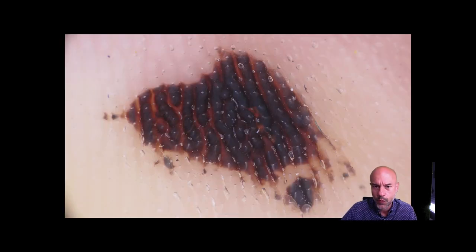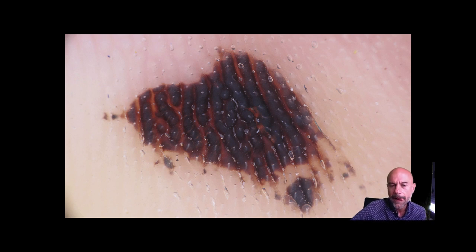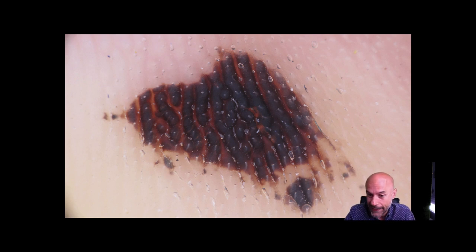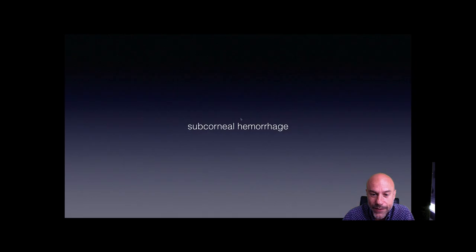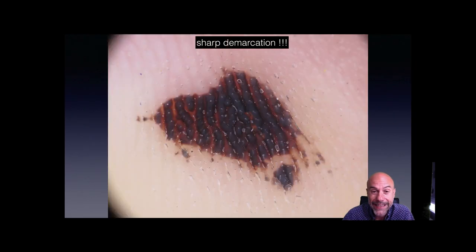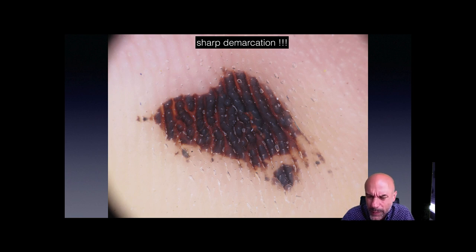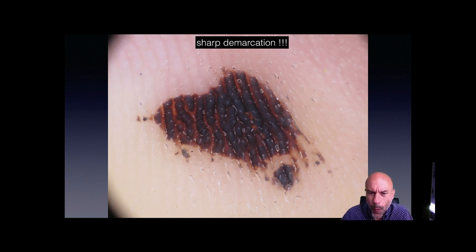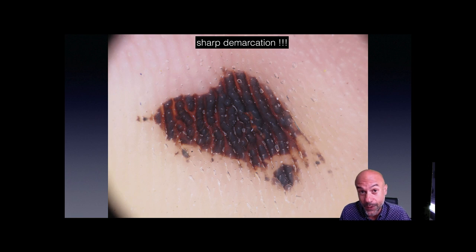In the next image, we can see a quite similar pattern that looks rather like a parallel ridge pattern. But this is not melanoma — this is a hemorrhage. We can say so because of the red color, and mainly because of the very sharply demarcated outline of the lesion, and also because of the presence of satellite hemorrhages not connected to the main body of the hemorrhage, which reveals that this is simply blood. Subcorneal hemorrhage is the most frequent cause of pigmentation of the soles.